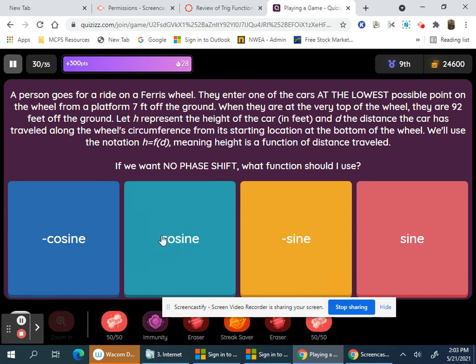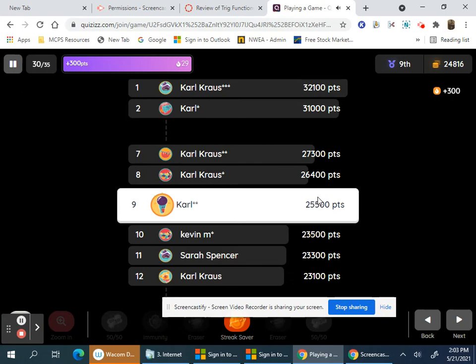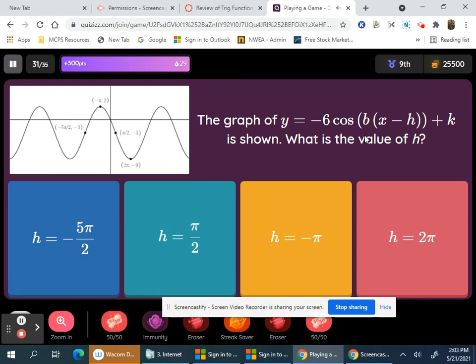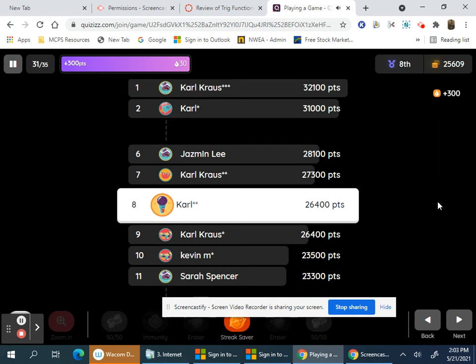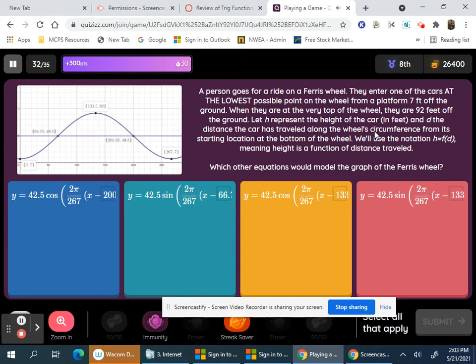If you start at the lowest possible point, that would be a minimum negative cosine. What's the value of h here? A negative cosine curve would be right here. So 2 pi is one of them, and that's right here.